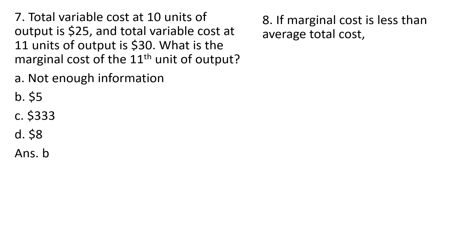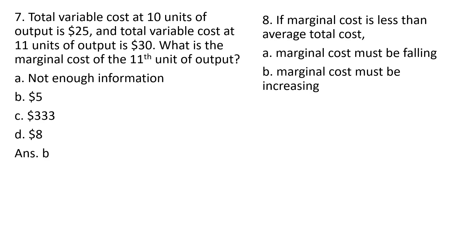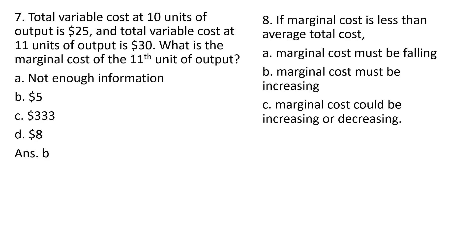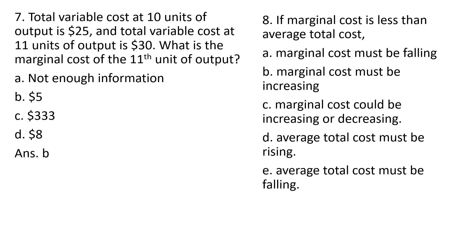Question 8. If marginal cost is less than average total cost — try to think of this graphically. Marginal cost must be falling — not necessarily true. Marginal cost must be increasing — not necessarily true. Marginal cost could be increasing or decreasing — that is correct, answer choice C. Average total cost must be rising — incorrect. Average total cost must be falling — that is correct. So C and E are the correct answers. If marginal cost is below average total cost, it is pulling it down, so average total cost is falling.